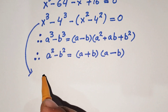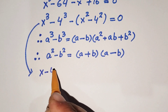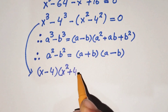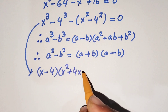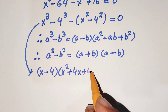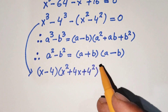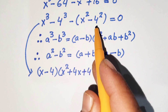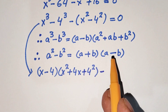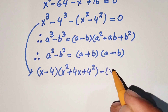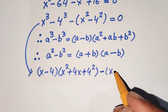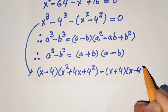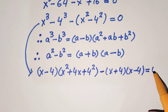Using the first formula on x cubed minus 4 cubed, we get (x minus 4)(x squared plus 4x plus 4 squared). Similarly, applying the difference of squares formula to x squared minus 4 squared gives (x plus 4)(x minus 4). So the full expression equals 0.